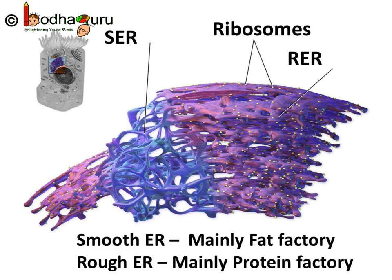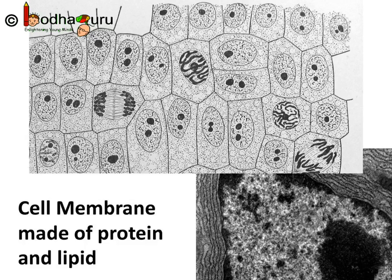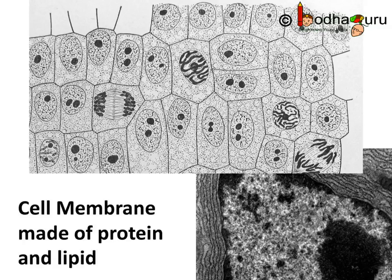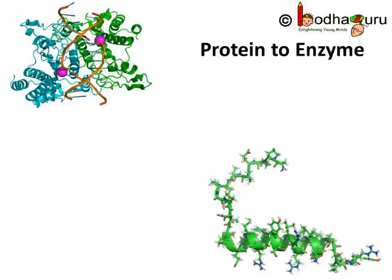We all know how important proteins and lipids are. Some of these proteins and lipids help in building cell membrane. This process is known as membrane biogenesis. You must also remember that enzymes and most of the hormones are made of proteins. Some hormones are also made of lipid. That's why proteins and lipids are very important.